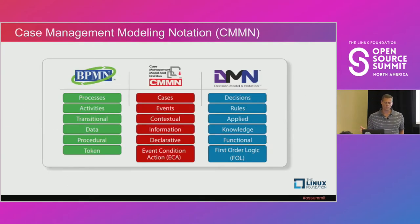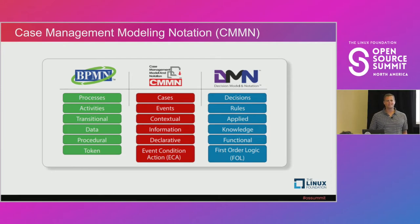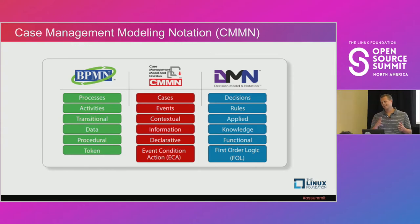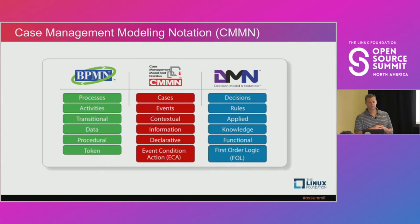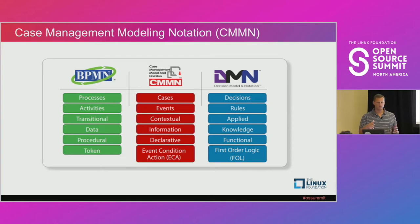The third notation — also by the Object Modeling Group — is Case Management Modeling Notation, or CMMN. This one focuses on cases: that investigative or research-based dynamic activity that is not as predictable as a flow. In the open source BPM landscape, products will use one or more of these notations — often all three, or at least two with BPMN and DMN.